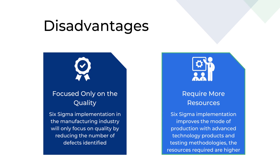The second disadvantage is that it requires more resources. Since Six Sigma implementation improves the mode of production with advanced technology products and testing methodologies, the resources required are higher. Apart from material resources, the need for highly skilled and experienced labor is also a drawback. There will be a need for employees with Six Sigma belt certifications to maintain the processes, and training and assistance are required for employees once Six Sigma is implemented.